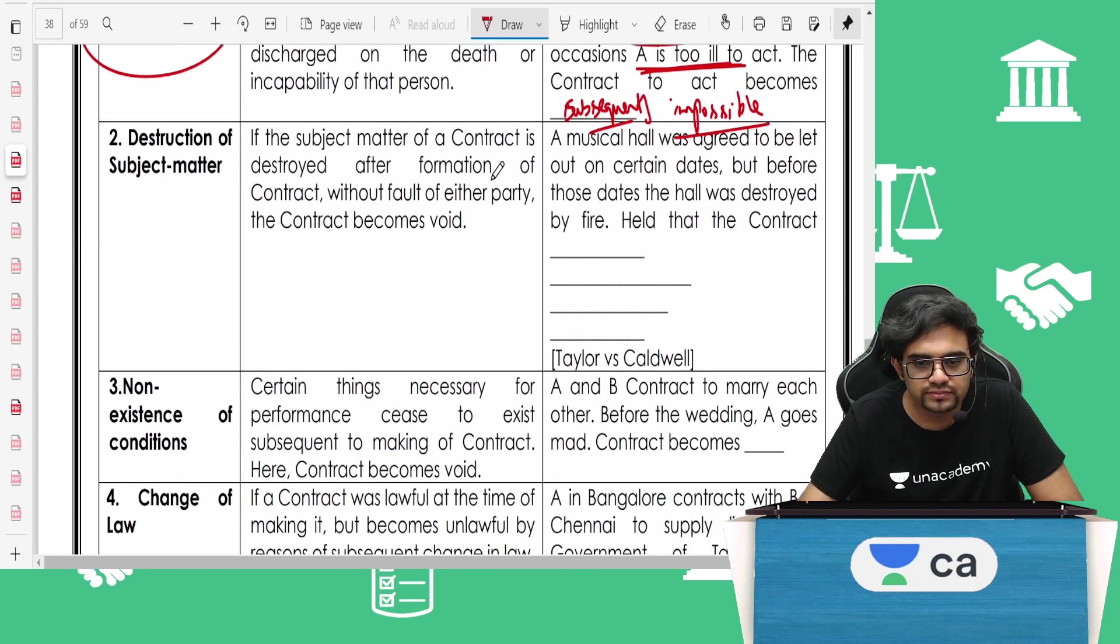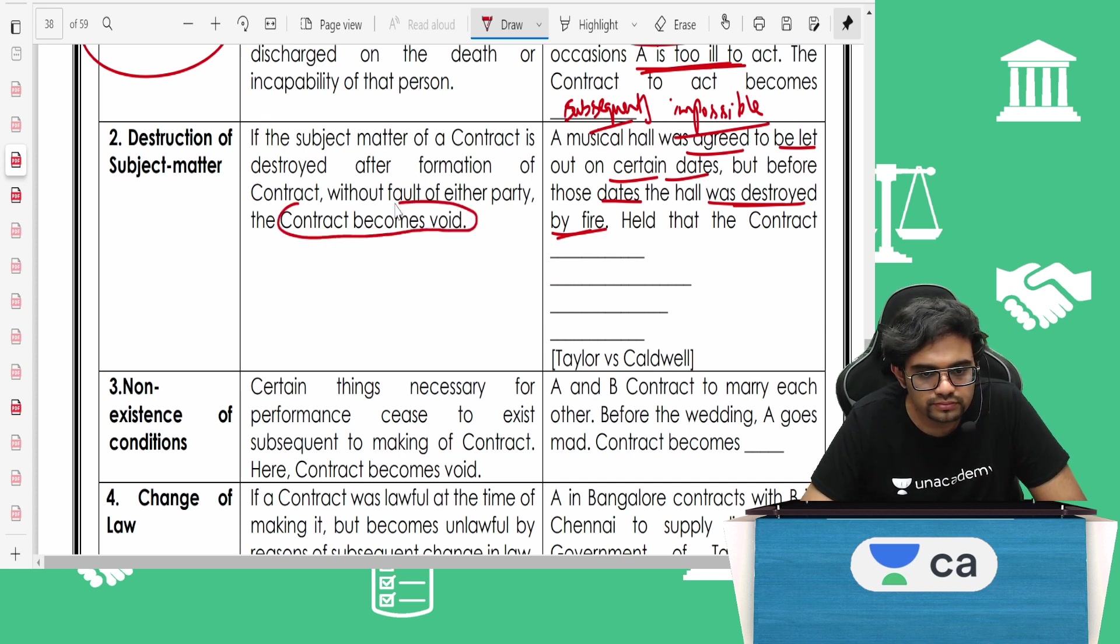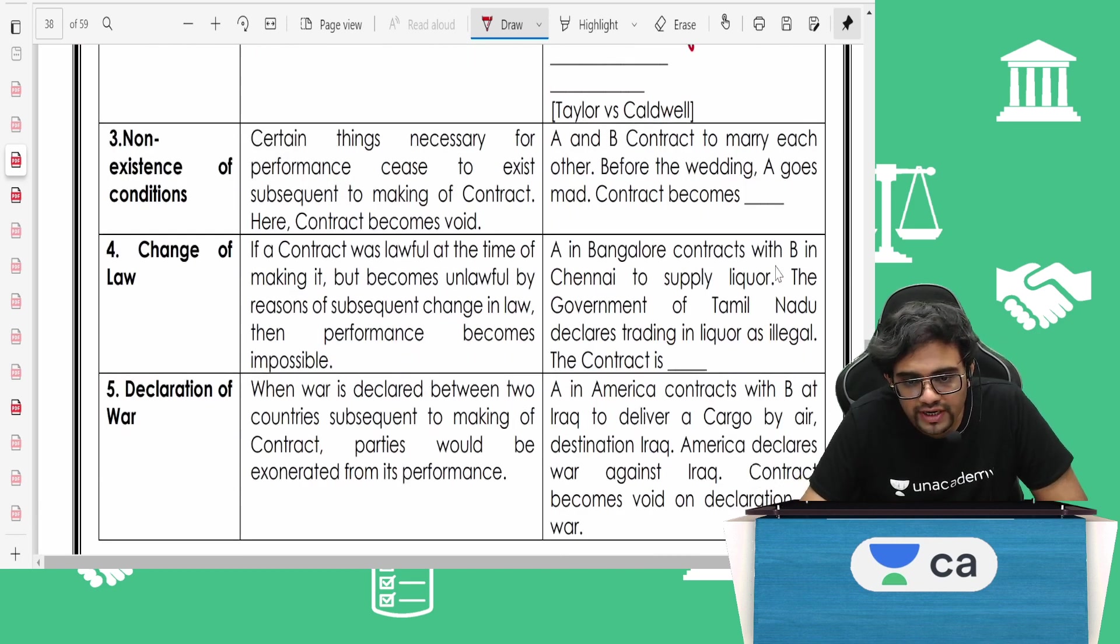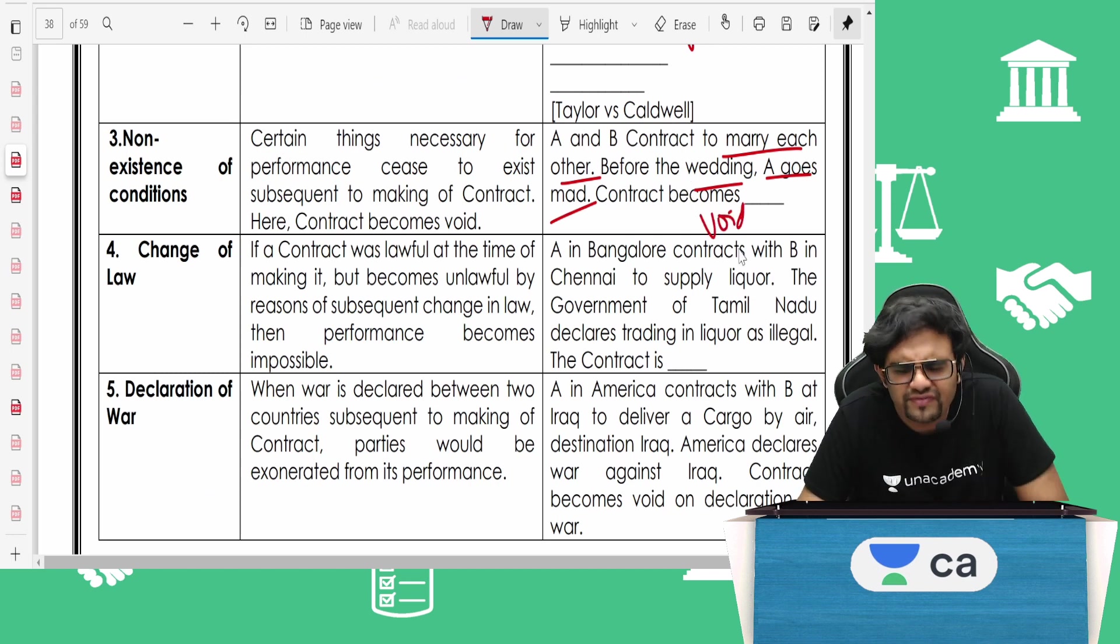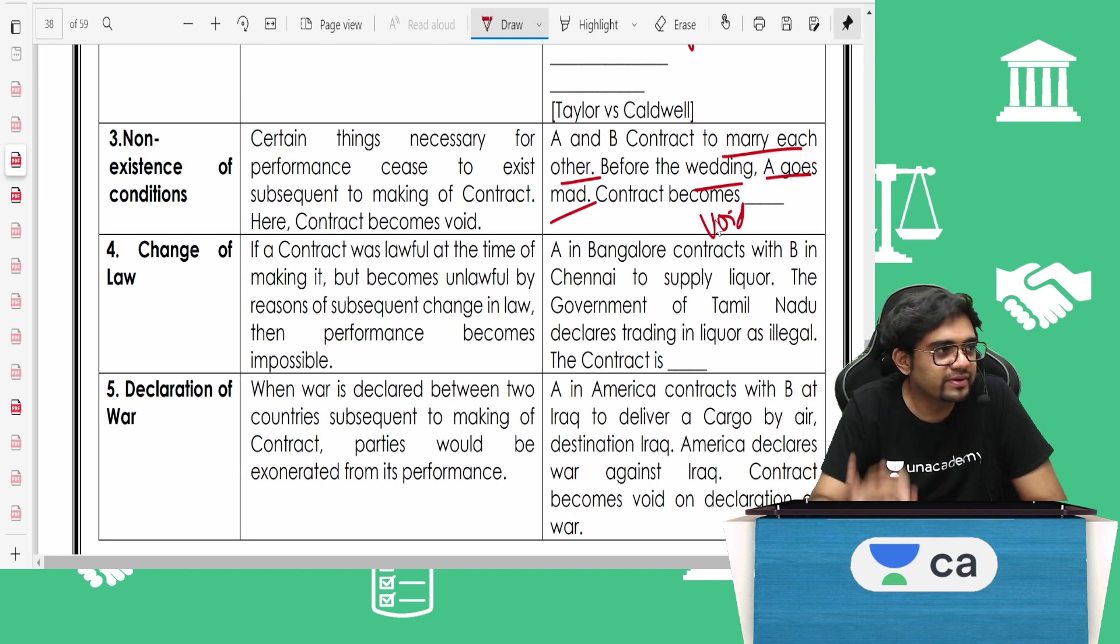Destruction of the subject matter. Musical hall was agreed to be let out on certain dates, but before those dates the hall was destroyed by fire. Held the contract was subsequently impossible, subsequently void. Initially valid, later destruction of the subject matter. A and B contract to marry each other. Before the wedding only A goes mad. Contract becomes void. After the wedding A goes mad, valid. After the wedding A goes mad means it is valid, valid ab initio.